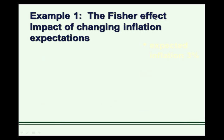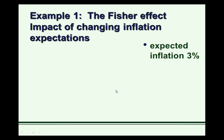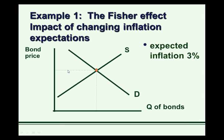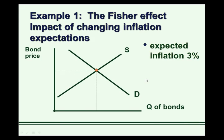Let's start with our first example, looking at the impact of inflation expectations. Example one illustrates what's known as the Fisher Effect, named after economist Irving Fisher, who wrote about the impact of inflation expectations. Suppose we have an environment where expected inflation is 3%. Under that environment, we have a bond market equilibrium — an equilibrium bond price, and thus interest rate, and an equilibrium quantity of bonds in the market.